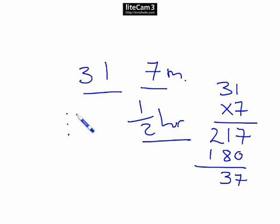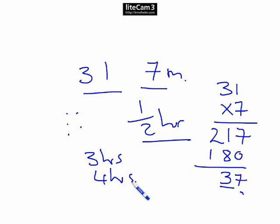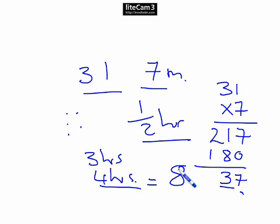So that was 1 hour, 2 hours, 3 hours. We've got a half an hour here, but we've got 7 minutes left over, so we're still going to need that other half an hour. So it's half an hour plus the other half an hour, making 4 hours. The question asked for half-hour lessons, so in 4 hours we have 8 half-hours. Our answer is 8.